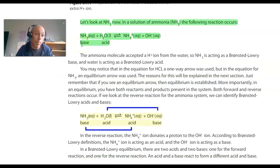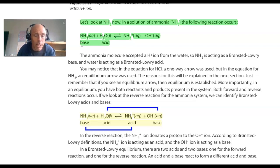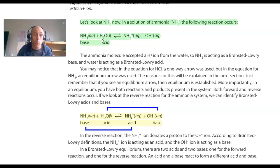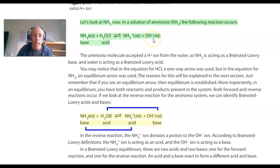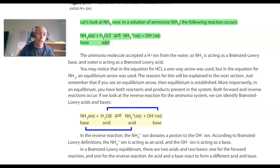Now we're looking at a Bronsted-Lowry base — a substance that accepts a proton from another substance. Ammonia, NH3, is our base. In this reaction it is accepting or bonding with a hydrogen ion from water, removing a hydrogen ion from water, forming ammonium, NH4+, and hydroxide. So the base is ammonia because it's accepting a proton. Water is acting as the acid because it's donating the proton. And our products are the ammonium ion and hydroxide.